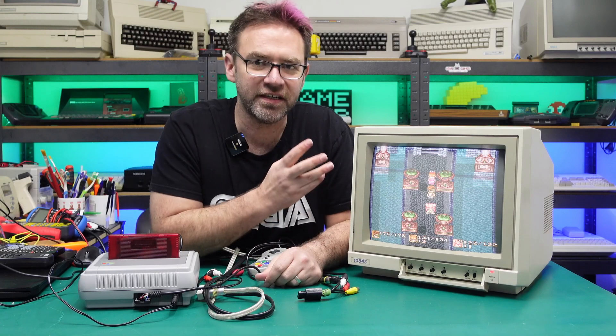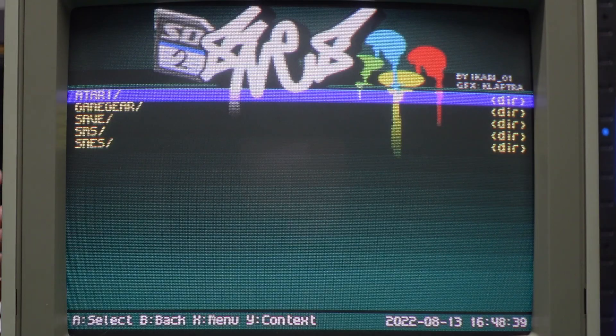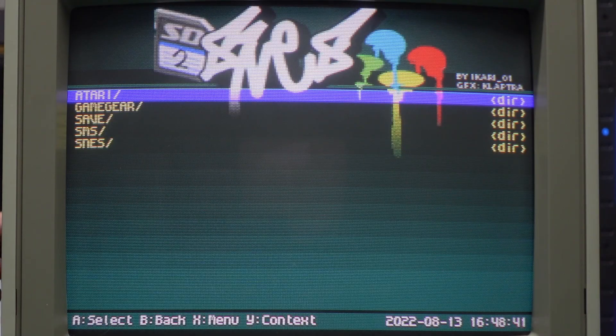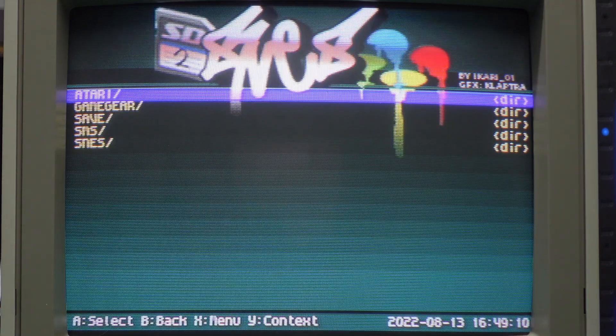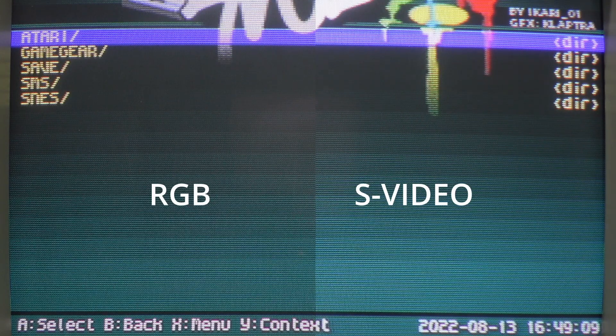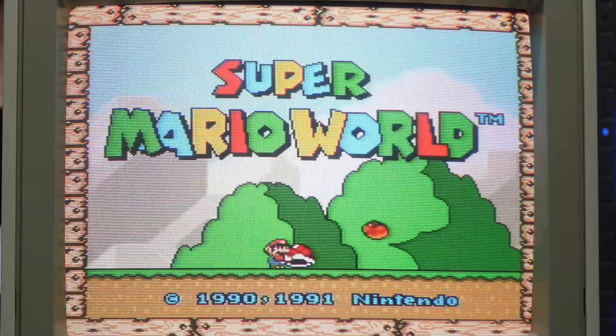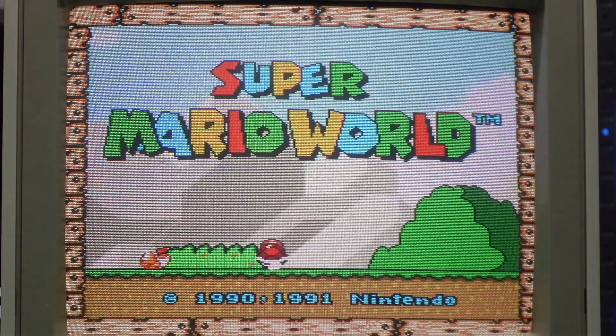And it looks incredibly sharp. All right so just as an example this is what the menu looks like with RGB enabled, and this is what it looks like through S-Video. Again this is S-Video, and this is RGB.